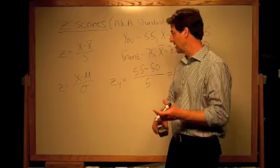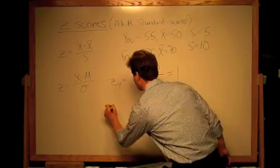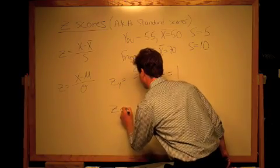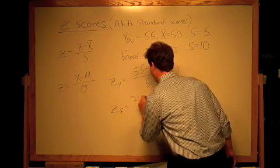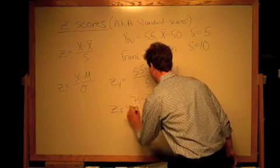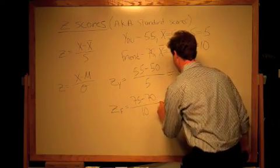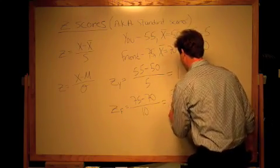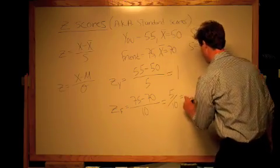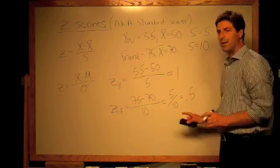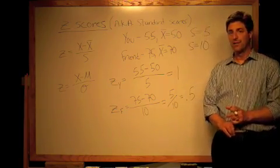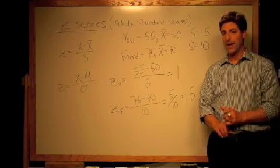Now let's calculate your friend's z score. Your friend got a z score of 0.5 or one half.